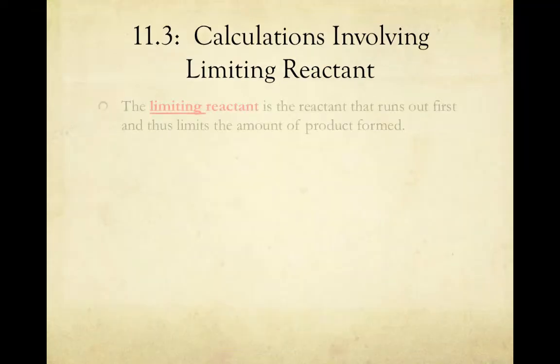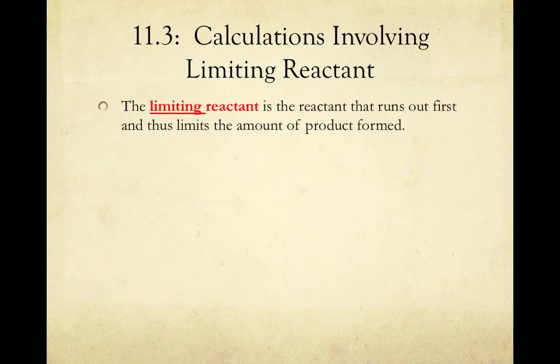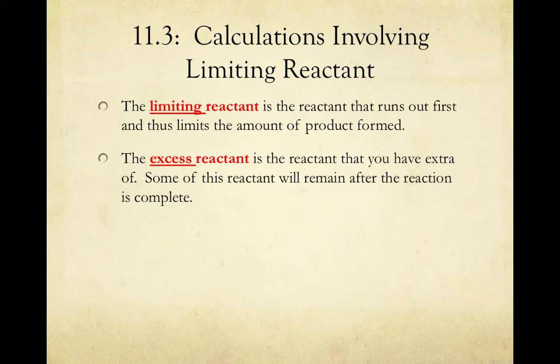In chemistry, a limiting reactant is the reactant that runs out first and thus limits the amount of product formed, just like our burger patties in the previous example. An excess reactant is a reactant that you have extra of — some of this reactant will remain after the reaction is complete, just like our burger buns, cheese, and tomato in the previous example.